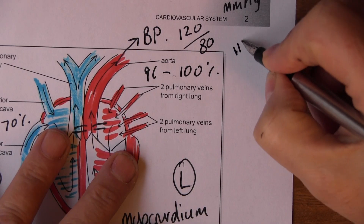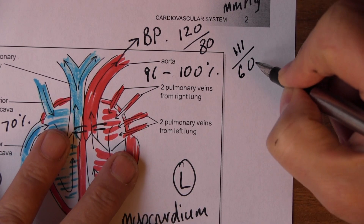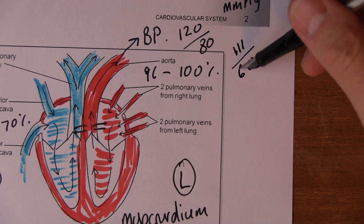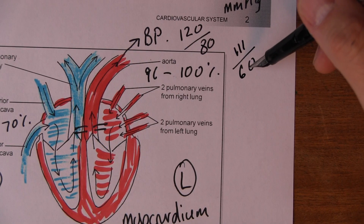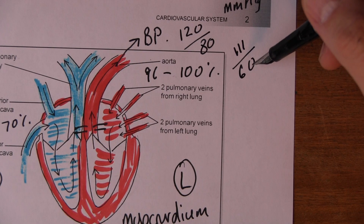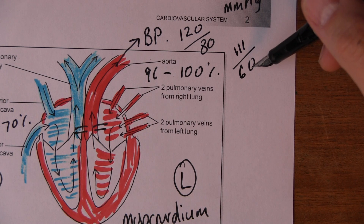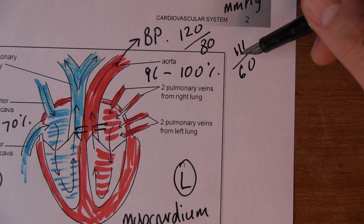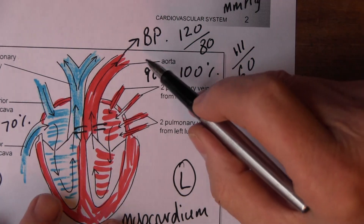People have talked about standard blood pressure being 120 over 80 for years, but if you're young and fit it's probably about 110 over 60 or 65. The lower your blood pressure the better, as long as you don't get dizzy or fall over. Get plenty of exercise, don't put on weight, avoid too much salt, eat plenty of fruit, vegetables, and foods containing potassium to keep blood pressure low.